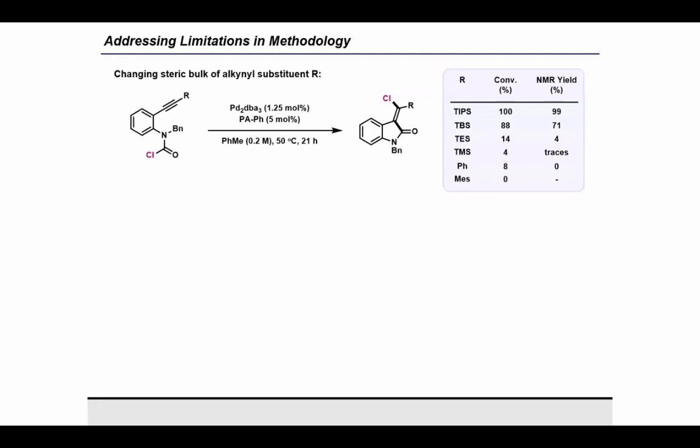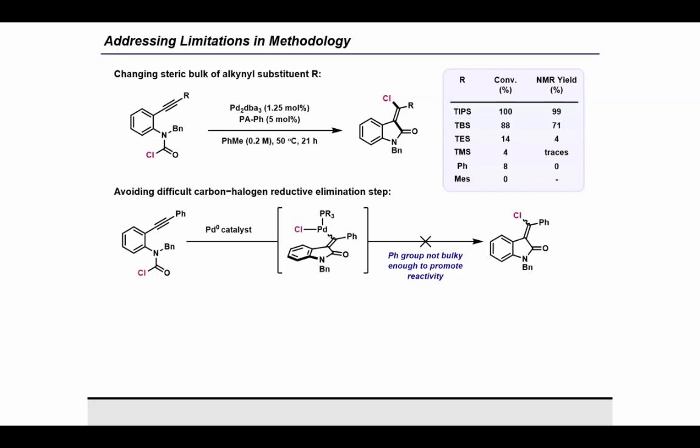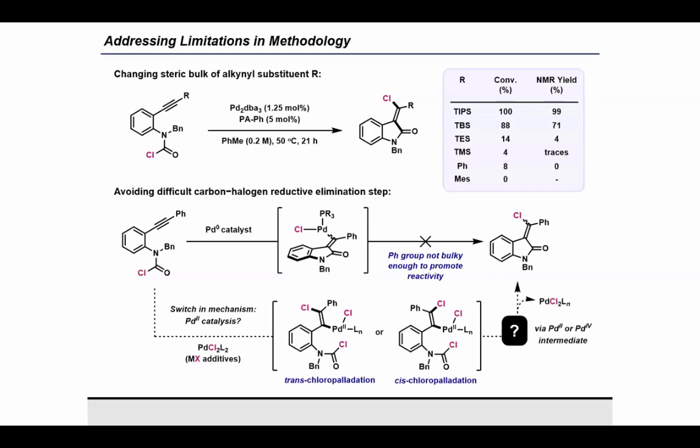As alluded to previously, having a TIPS group at the terminal alkyne position was crucial for reactivity. As you can see, as we decrease the steric bulk of that substituent, we see a complete drop in yield. We were particularly interested in accessing the phenyl-substituted chloromethylene oxindole due to its prevalence in medicinal chemistry. At this point, I wondered if I could access the same molecule by simply switching from the palladium-0 catalyst to a palladium-2 catalyst and invoking a different mechanistic course. So instead of activating the carbamoyl chloride first, the electrophilic palladium chloride catalyst can coordinate to the alkyne and undergo a trans- or cis-chloropalladation process. At this point, a nucleophilic vinyl palladium species is generated, which can then activate the carbamoyl chloride through a C-C bond-forming process to give the product.